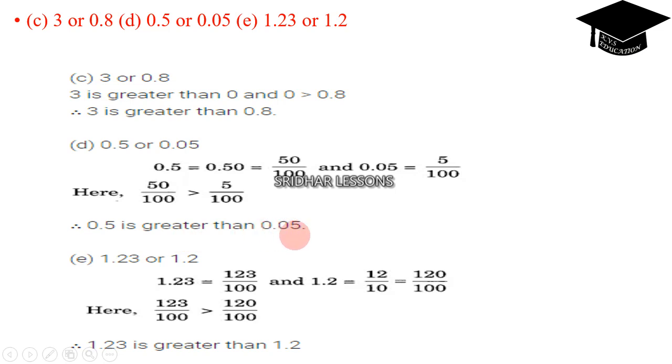Next, 1.23 or 1.2 is greater? 1.23 can be written as 123 by 100, and 1.2 can be written as 12 by 10. To make the equal denominators, we can multiply with 10 by 10. 12 times 10 is 120, and 10 times 10 is 100. Hence here, 123 by 100 is greater than 120 by 100. Therefore 1.23 is greater than 1.2.